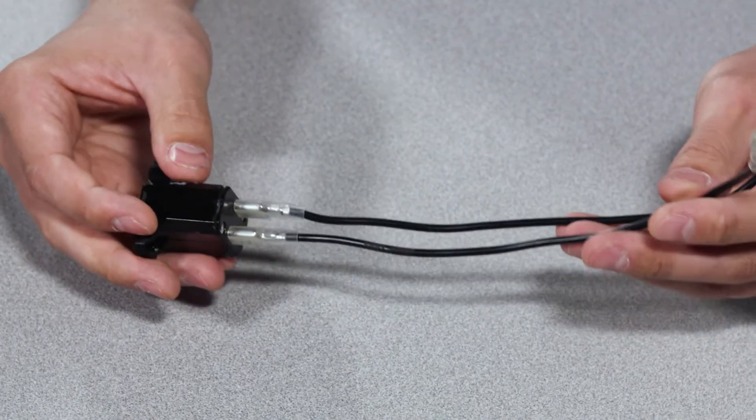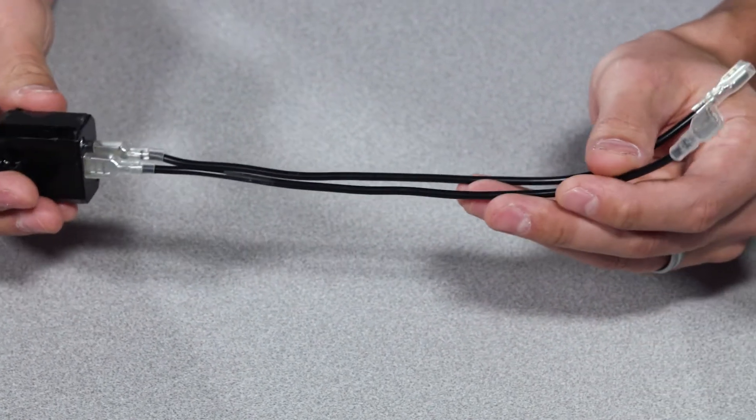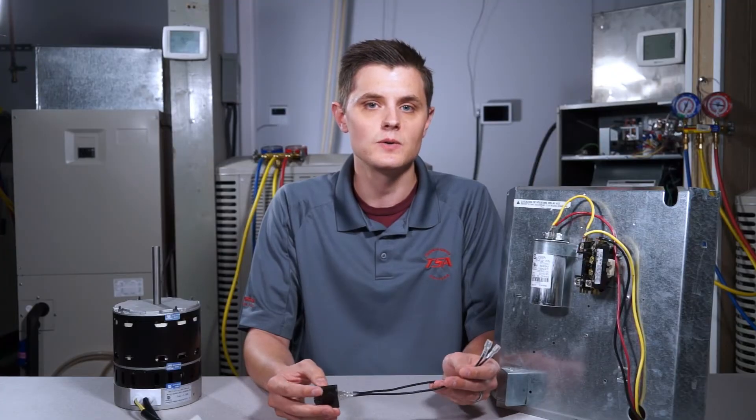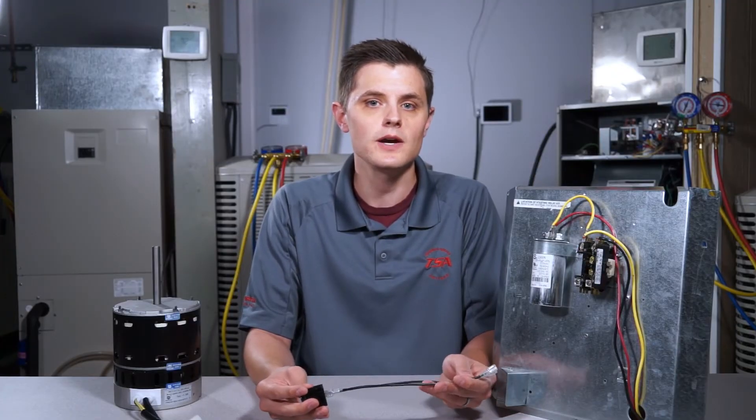This part will be used with our Samsung rotary compressors and will be found in those units. What this part does is it adds starting torque to your compressor when you have a call for cooling.